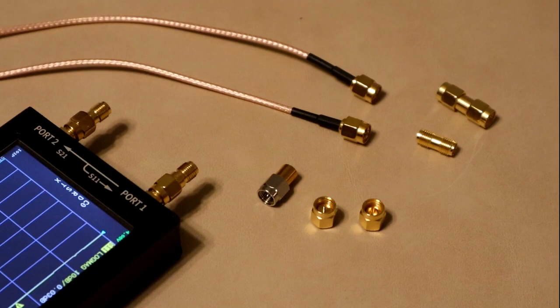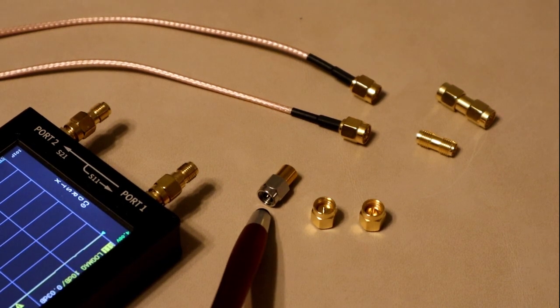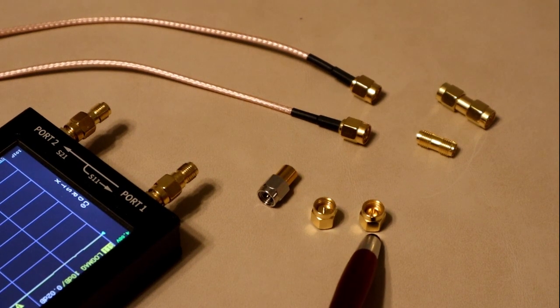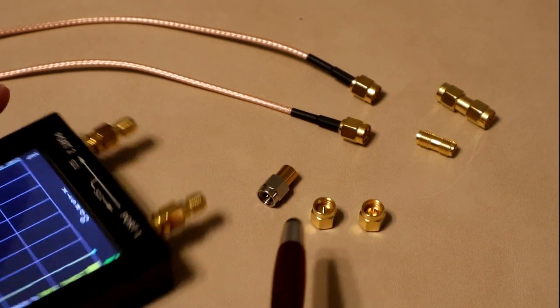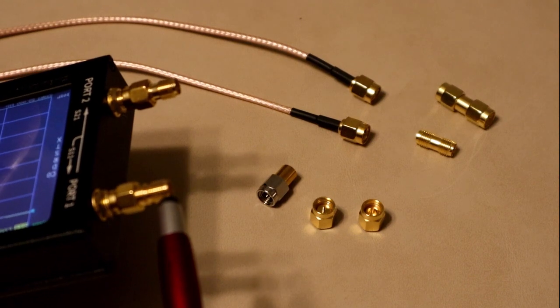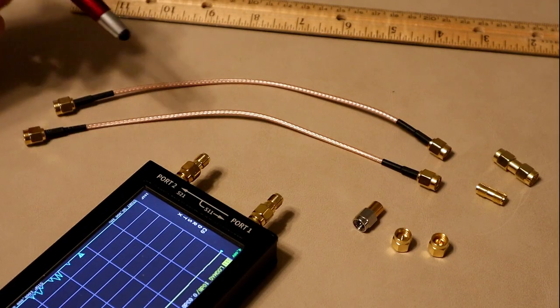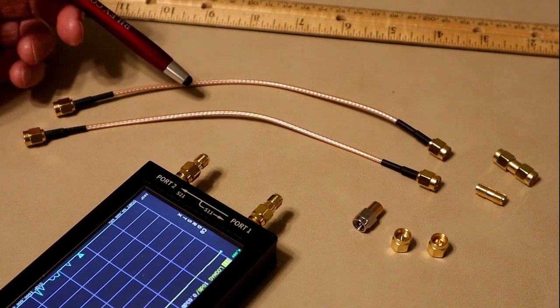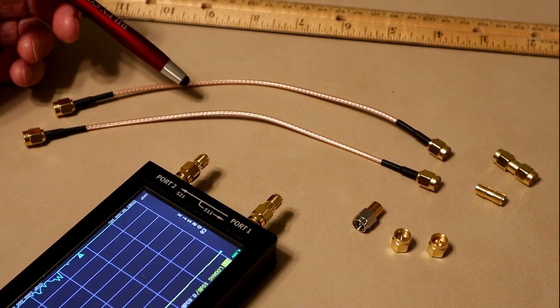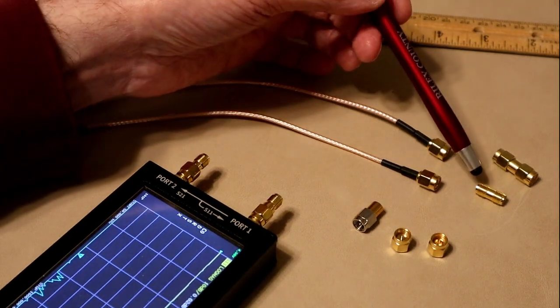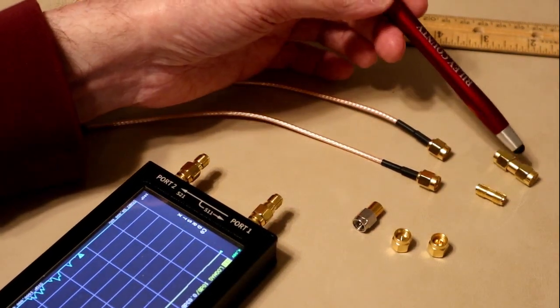When you purchase a Nano VNA, you usually get some accessories. I got this load or 50 ohm termination, a short and a little open that doesn't do anything because that's a pretty decent open at these frequencies. They also typically give you a couple of short cables for doing S21 cal or for connecting to the things you're going to measure, and a couple of adapters, female-female SMA and male-male SMA.